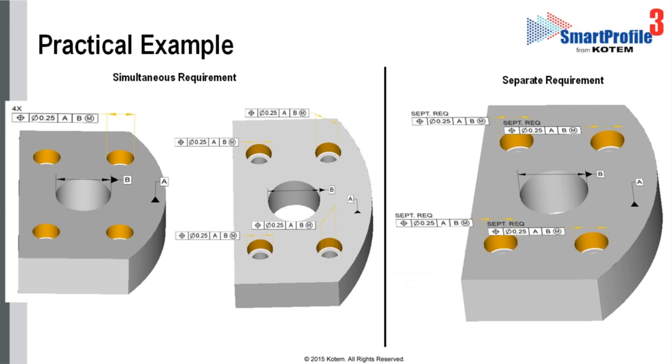These four feature control frames are equivalent to a single feature control frame tolerancing the four holes as a pattern, which can also be seen on the left.